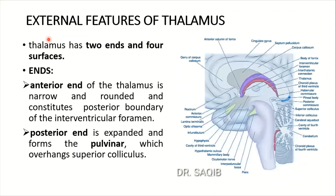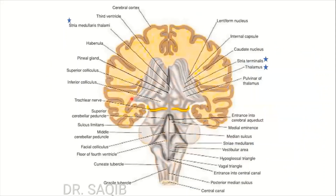External features of the thalamus: it has two ends and four surfaces. The anterior end is narrow and rounded and constitutes the posterior boundary of the interventricular foramen - the foramen of Monro. The posterior end of the thalamus is expanded and forms the pulvinar. The pulvinar overhangs the superior colliculus.